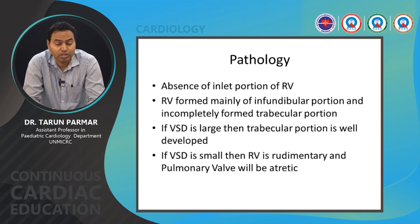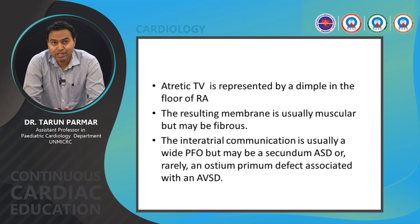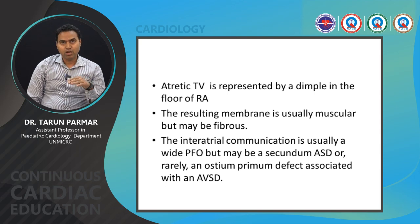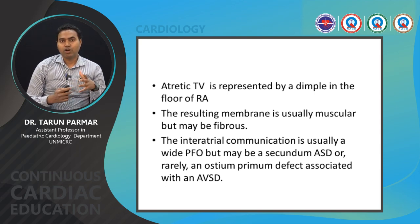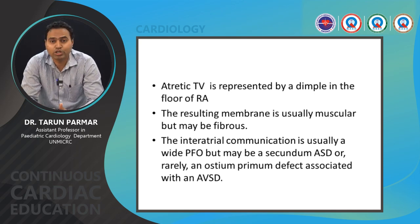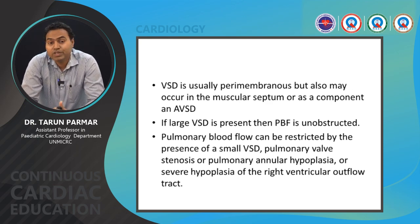In extreme cases, the pulmonary valve may be atretic. The atretic tricuspid valve is represented by a dimple in the floor of the right atrium; the resulting membrane is either muscular or fibrous. The interatrial communication is usually wide — often a PFO or secondary ASD, or may be an ostium primum defect in the case of AVSD. VSDs are usually perimembranous, or can be muscular or inlet in the case of AVSD.